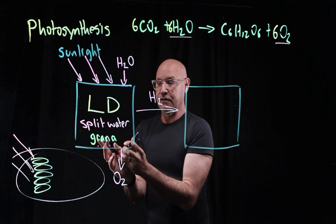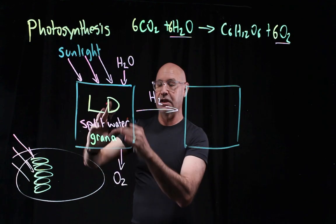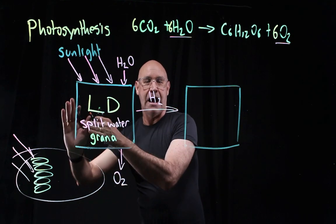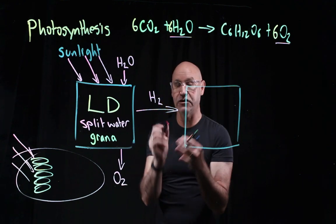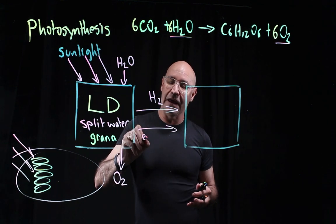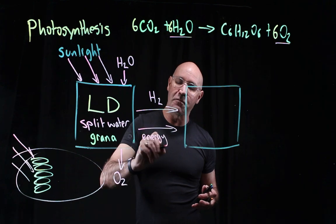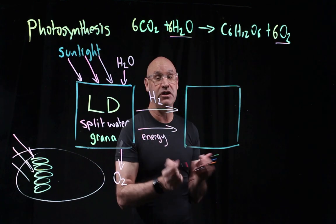The light dependent reactions happen in the grana. They split water, and hydrogen goes across to the second half of the reaction. There's one more thing also, and that is energy. The energy is in the form of ATP and also high energy electrons.